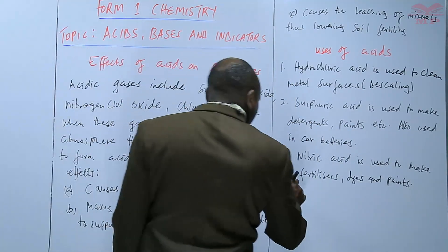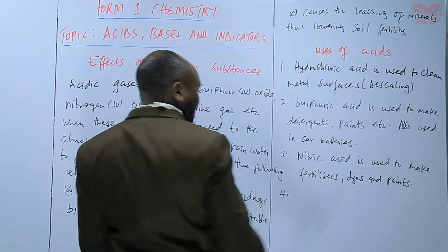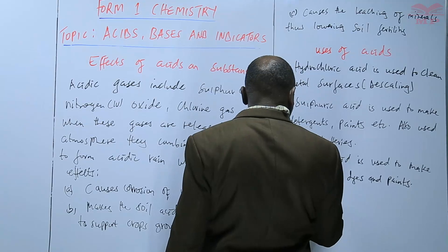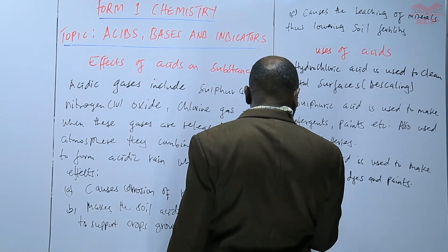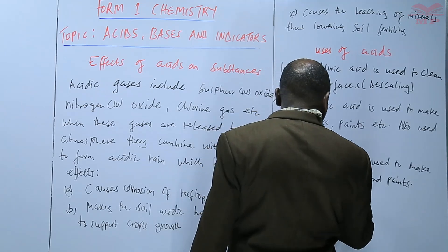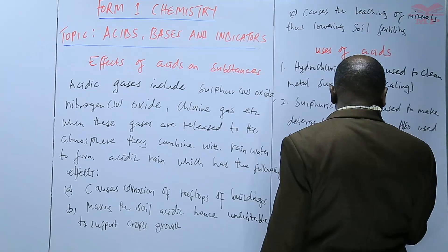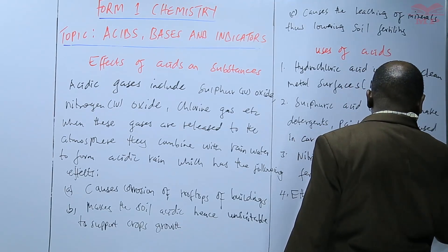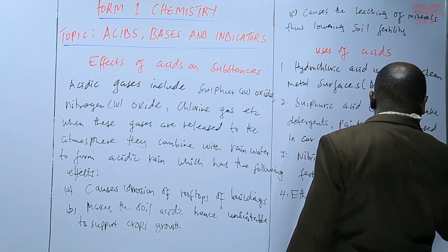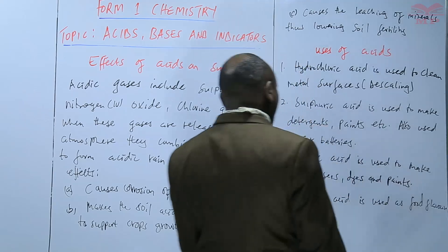As another use, we have acids such as ethanoic acid. Ethanoic acid is used as food flavor, or is used in flavoring foods.